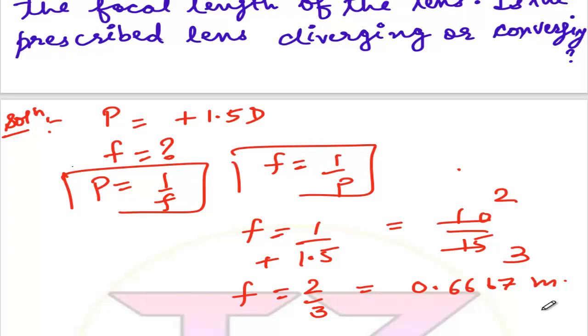So converging lens is our answer, because focal length is positive. Both simple questions - you should know the formula, that the power formula is P equals 1 by f, so we can solve these questions.